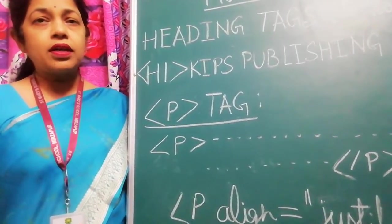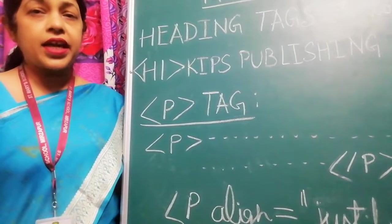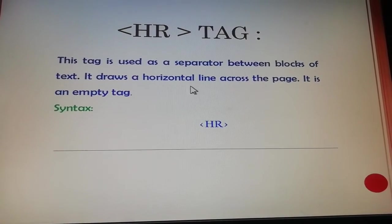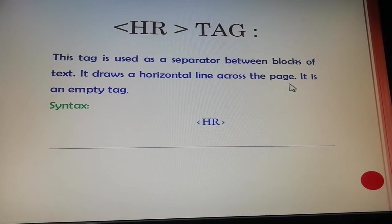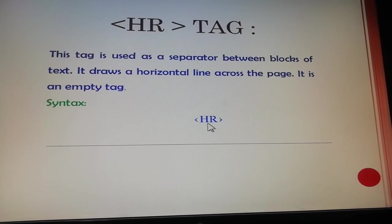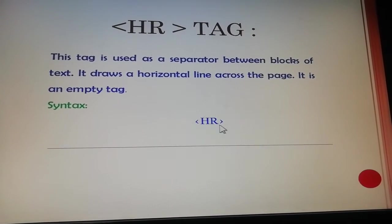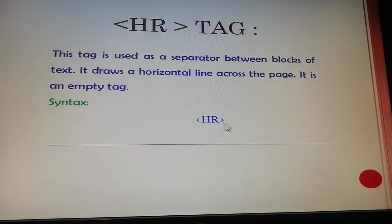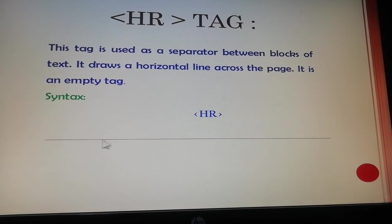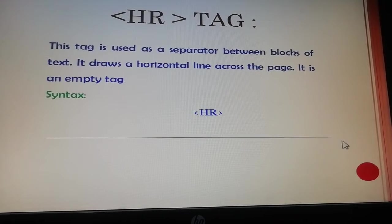Now the next tag that we will learn is the HR Tag. HR Tag is used to draw a horizontal line across the page. It is an empty tag, so we can write it simply as HR. Then as a response of this tag, we will get a horizontal line on the web page.